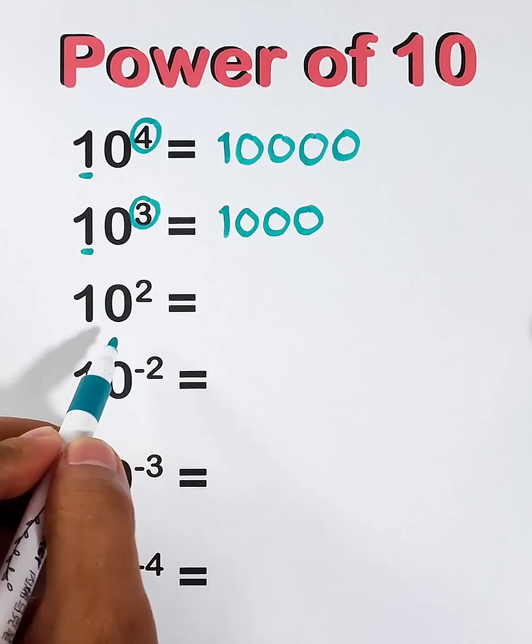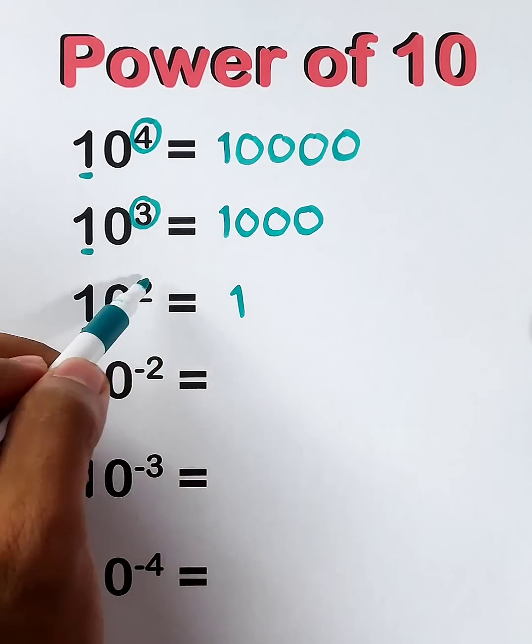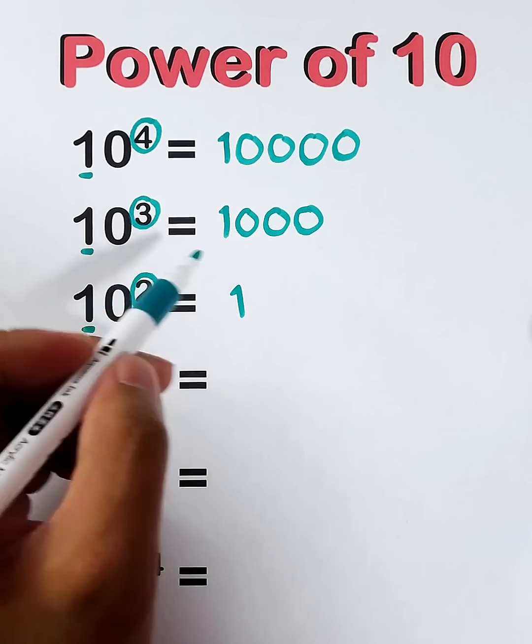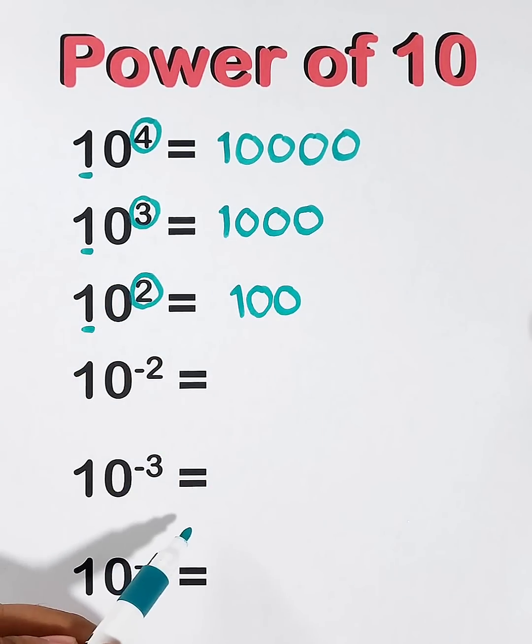Next, 10 raised to the second power. Copy 1. And we have 2 as our exponent, meaning we will put or write 2 zeros. And the answer is 100.